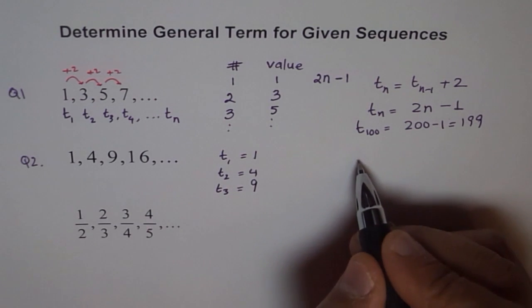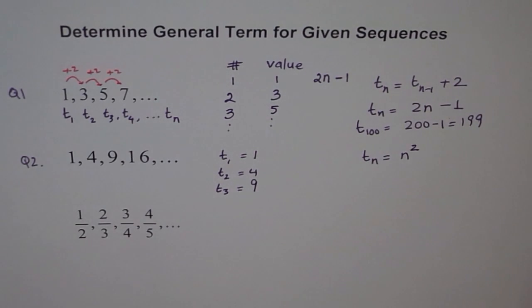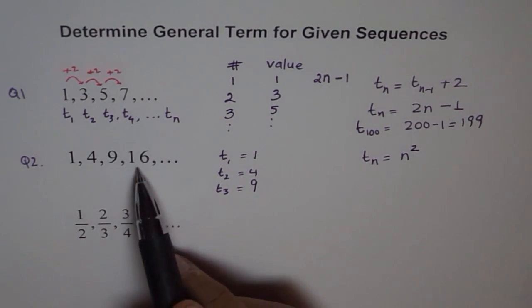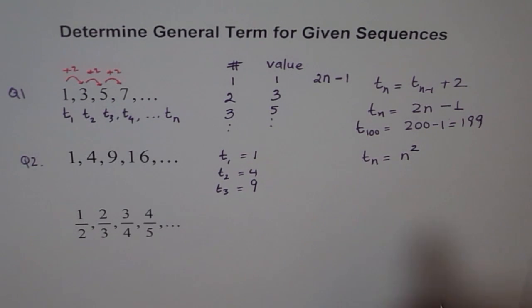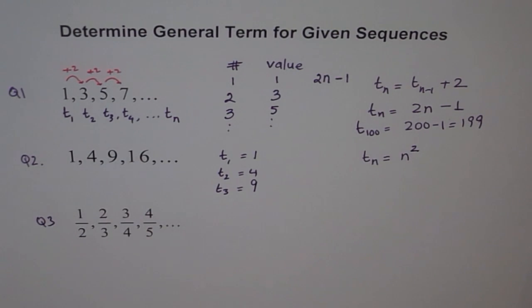Looking into this pattern, we can say tn equals to n square. 4 is 4 square, and you get a general term. So in sequences, you have to kind of relate term number to its value to figure out a formula. Let's try another question.